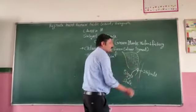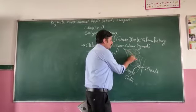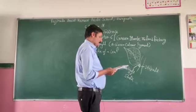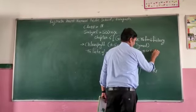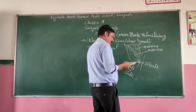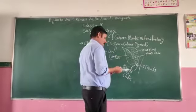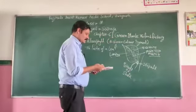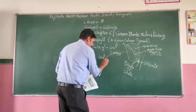The leaf has a venation system. There is a midvein running through the center, and from it branch out lateral veins — also called side veins. The midvein is called the midrib, and the flat broad part of the leaf is called the lamina or leaf blade.